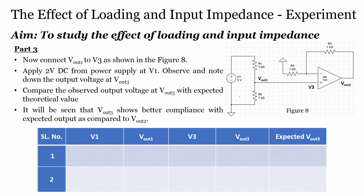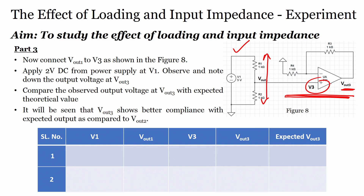Here on the screen you can see the same potential divider circuit connected to a non-inverting amplifier. We have already seen what a non-inverting amplifier is and how to use it in experiments. You apply a voltage to the non-inverting terminal of the amplifier through the potential divider circuit, and you measure the output V_out3.